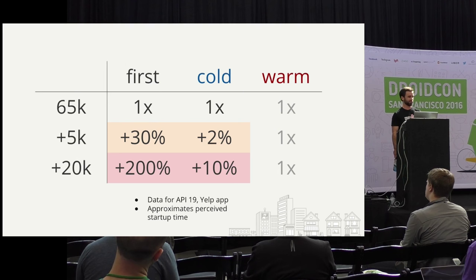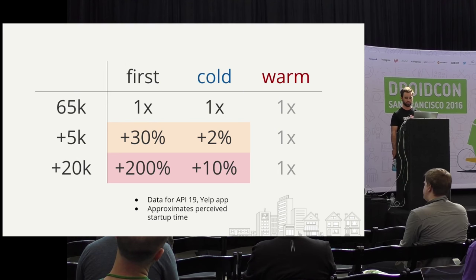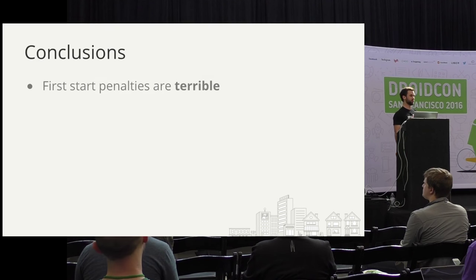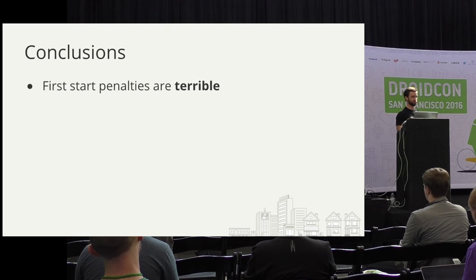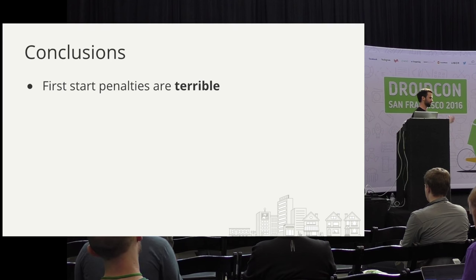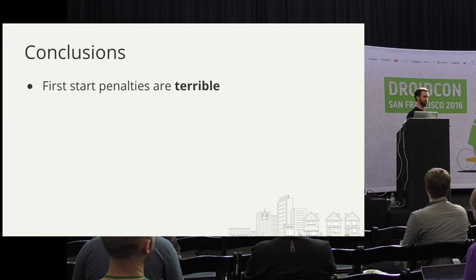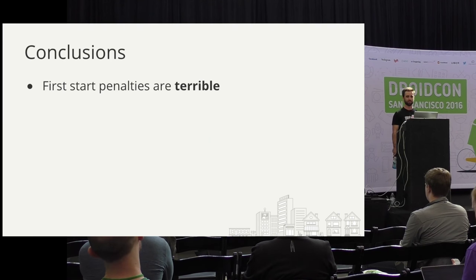Looking at this data, we were like: dang, this sucks. The first start penalties were terrible — 30% when you're 5,000 methods over and 200% when you're 20,000 over. That's really unacceptable when you think about the fact that these are the very first users using your app. They open it up, the first impression is 'this is super slow.' These are not the users you want to be seeing this penalty.